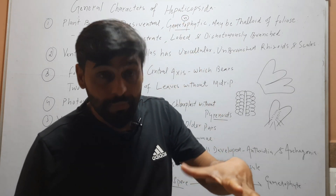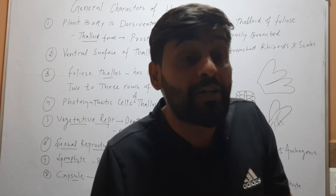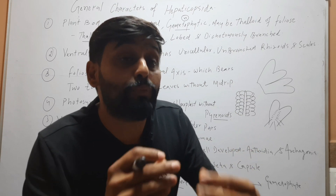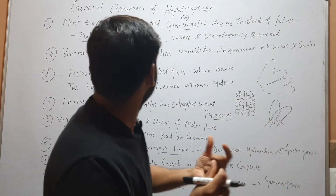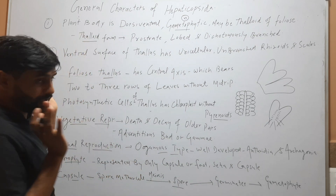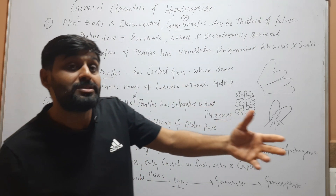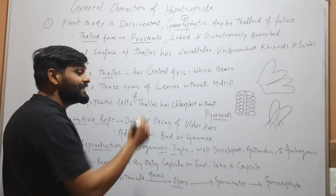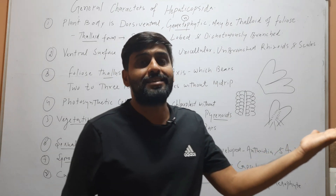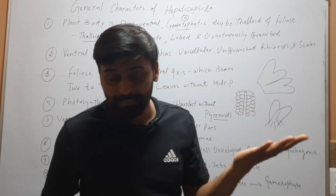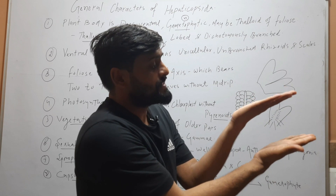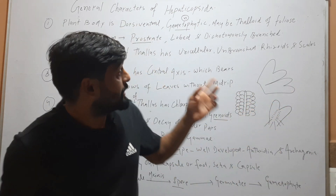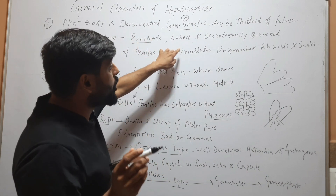The plant body may be thaloid — a thallus-like form which is not differentiated into leaves, shoot, or root — or it may be foliose, meaning leaf-like, where the body is differentiated into axis and leaves. If the body is thaloid, it is not differentiated into root, shoot, and leaves, and the body is prostrate, meaning it lies flat on the soil surface.